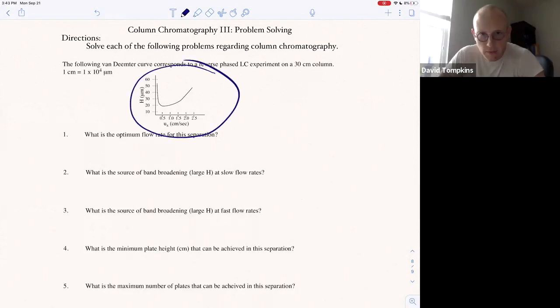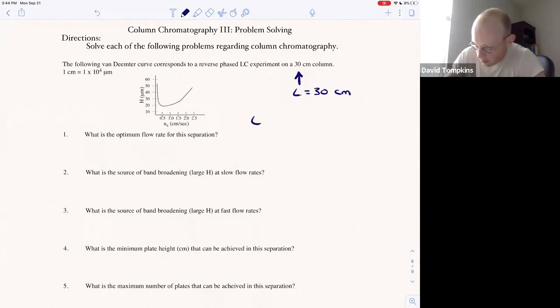Here you're given a Van Deemter plot for a reverse phase liquid chromatography experiment and you're told the length of the column, or the extrinsic physical parameter that relates the number of plates with the plate height, is 30 centimeters.